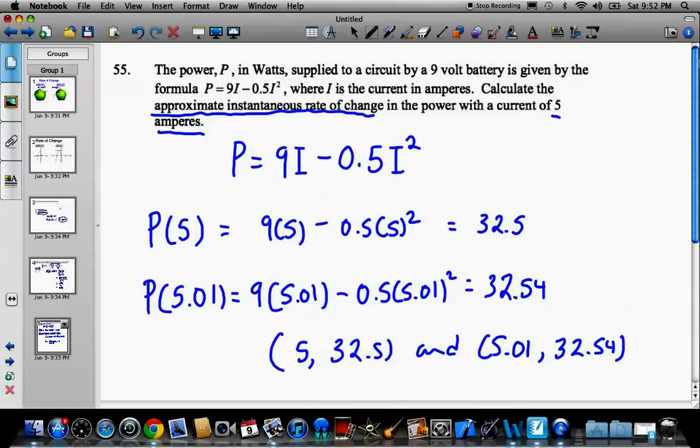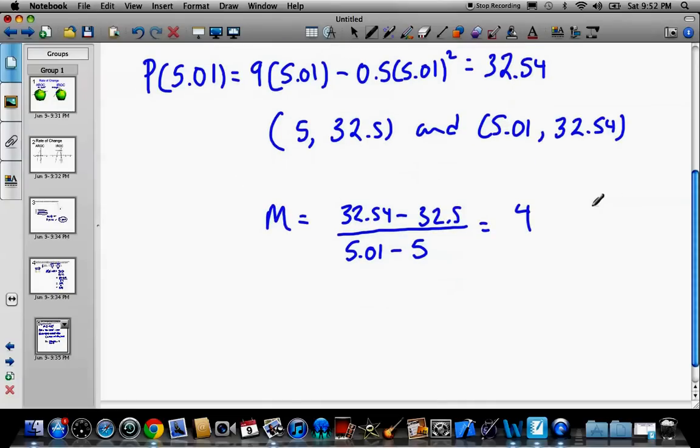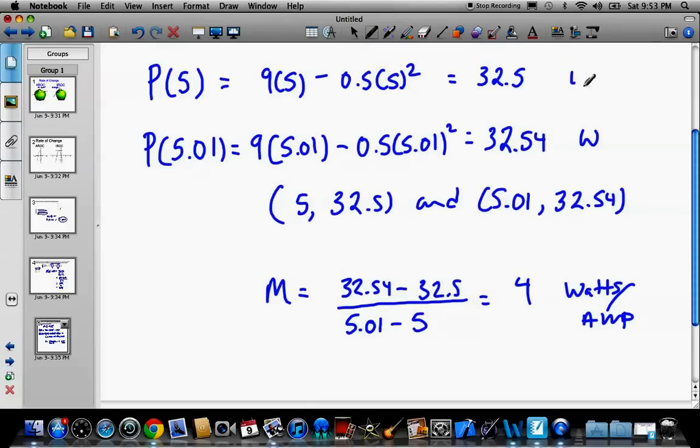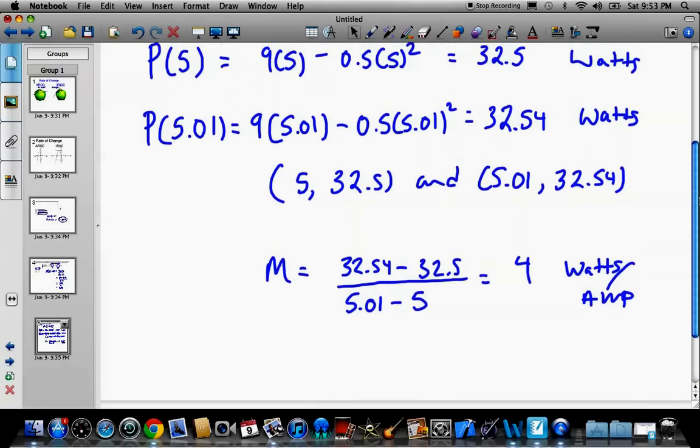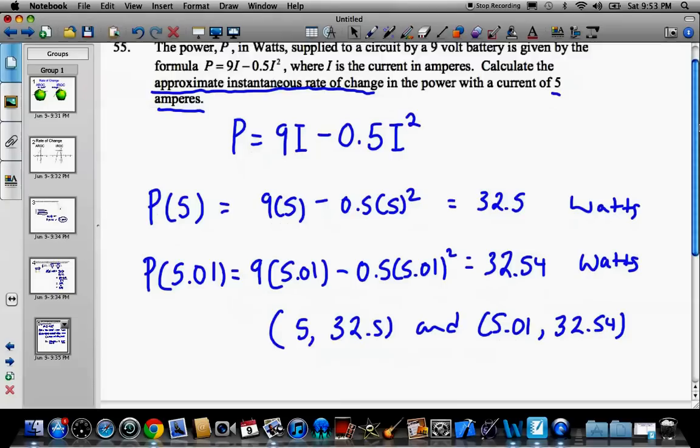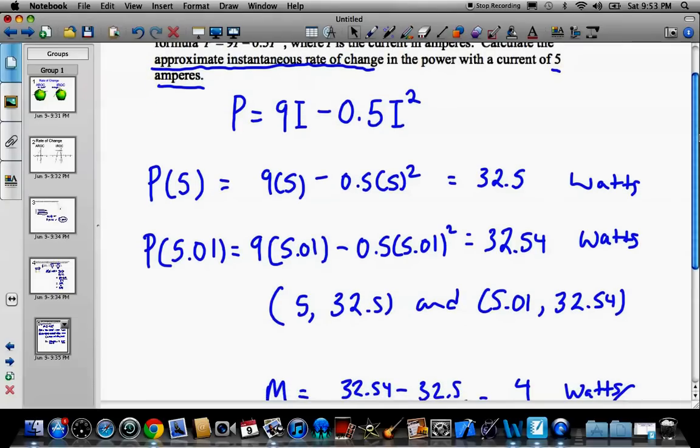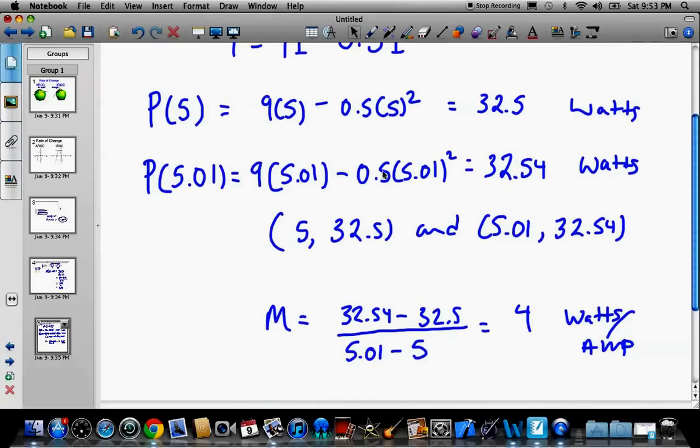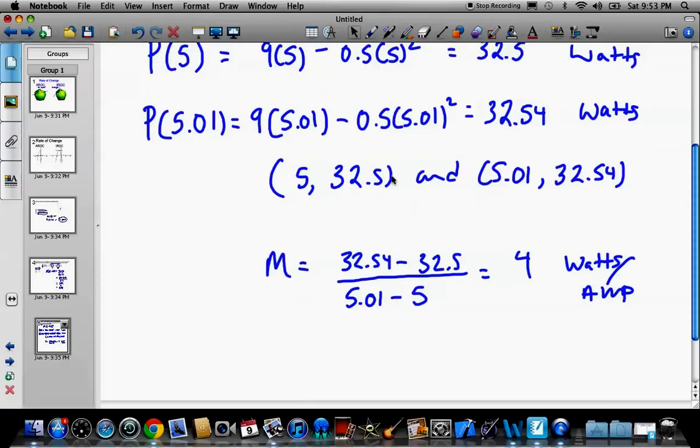So we end up with a slope of 4. So now we're going to look at the units. Units with this one are a little bit more complicated. The power is in watts. So it looks like it's going to be watts per amp. So that's how you do that, basically. Again, instantaneous rate of change, we're just approximating it by using AROC. We pick a point and a point extremely close. Sub it into the formula. We've got two points. We use the slope.